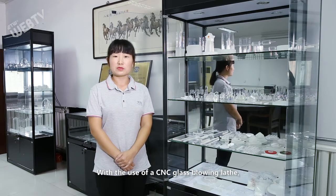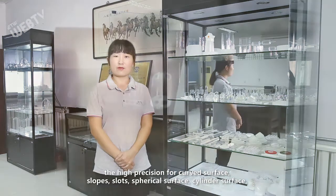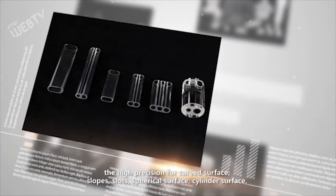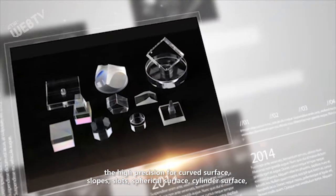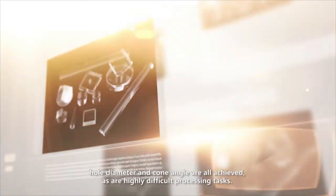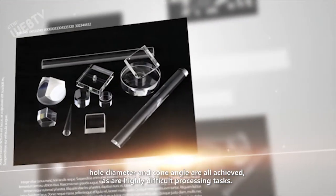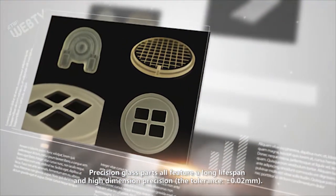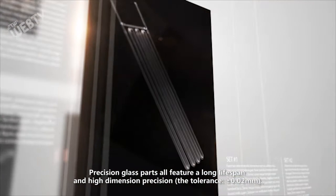With the use of a CNC glass blowing lathe, the high precision for curved surface, slopes, slats, spherical surface, cylinder surface, hole diameter, and cone angle are all achieved, as are highly difficult processing tasks. Precision glass parts all feature a long lifespan and high dimension precision.